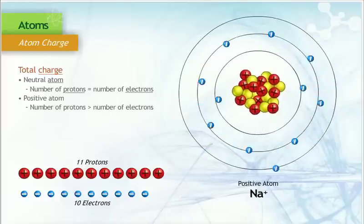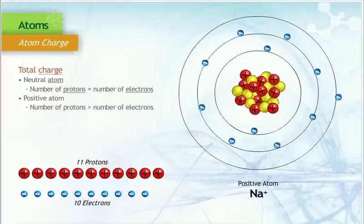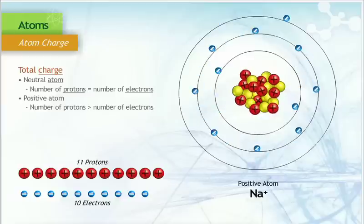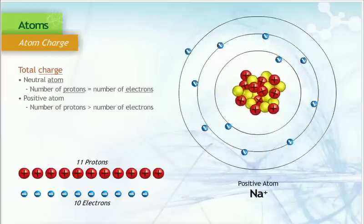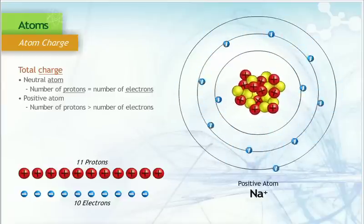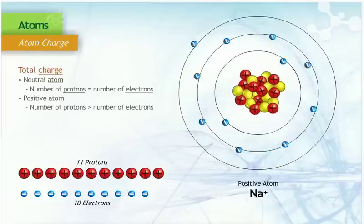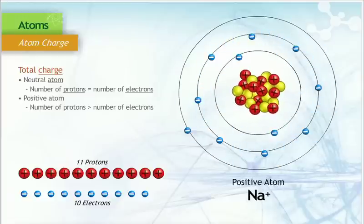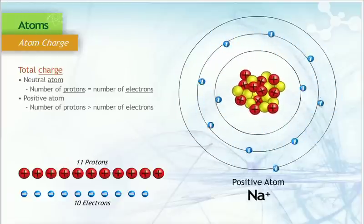When one electron is removed from our neutral sodium atom, there are 11 protons and 10 electrons — one more positive charge than negative charge — giving the atom a positive charge. This is expressed by adding a plus sign superscript to the element symbol.